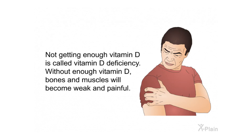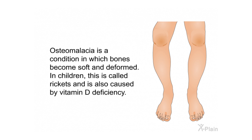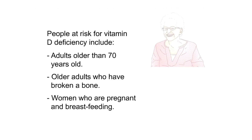Not getting enough vitamin D is called vitamin D deficiency. Without enough vitamin D, bones and muscles will become weak and painful. Vitamin D deficiency in adults can cause osteoporosis, a condition in which bone density decreases causing bones to become fragile, or osteomalacia, a condition in which bones become soft and deformed. In children, this is called rickets and is also caused by vitamin D deficiency.